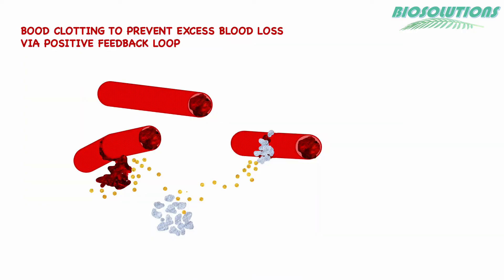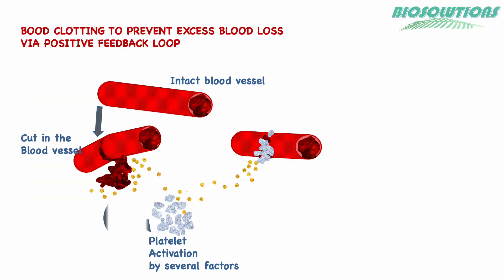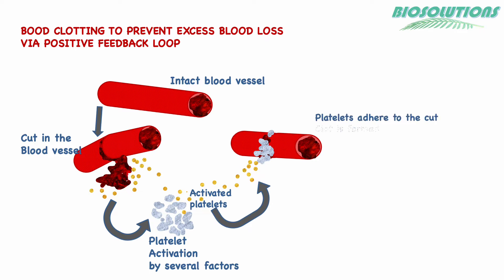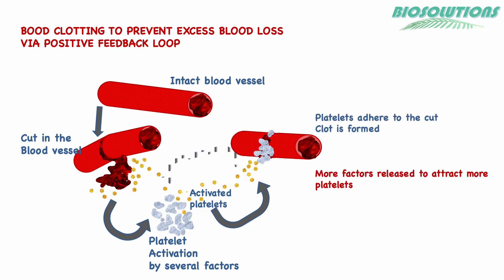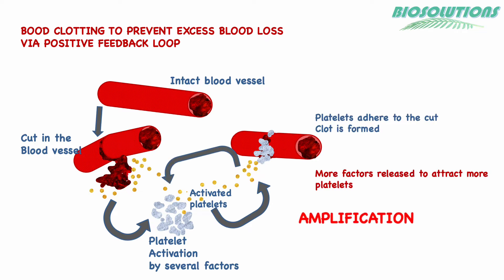Two feedback systems function in harmony to achieve homeostasis. Positive feedback is like a play switch to start the process, which amplifies the change so the response is very fast — like when we cut our finger, the blood clotting is initiated and promoted.